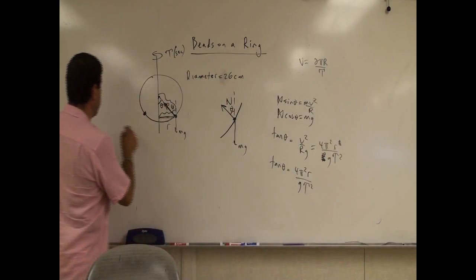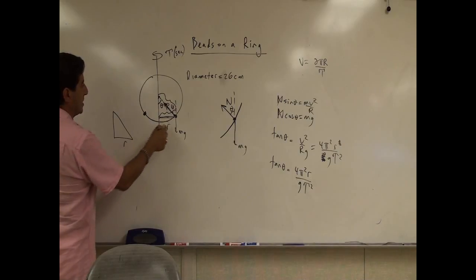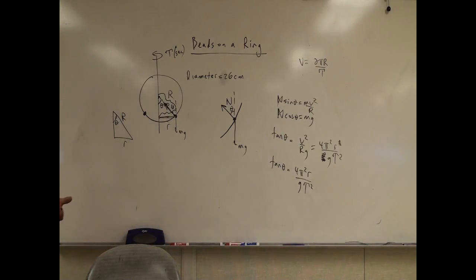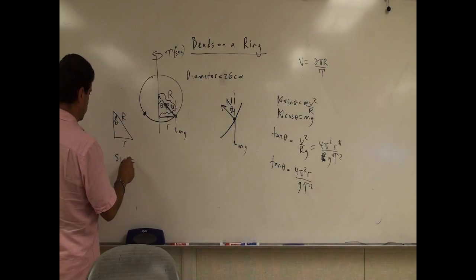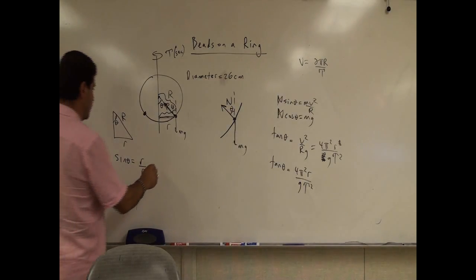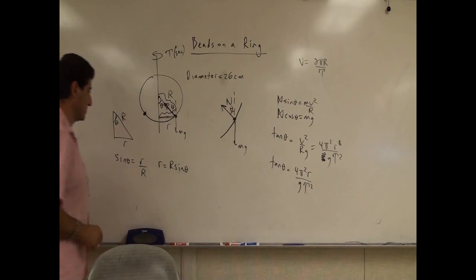So then I can relate, based on the geometry of the case. I can say this is a little r and this is theta. And then this is the radius of the circle, of the actual ring itself. So then we can say sine of theta is equal to what? r over r. So then we can say r is equal to r sine of theta.